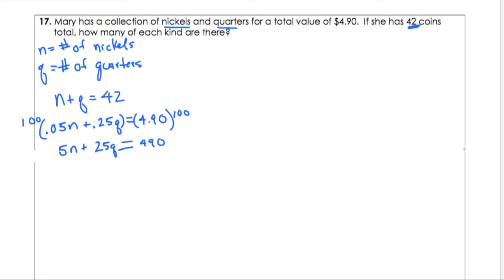So I'm going to again solve this similarly to our last example. I'm going to take this equation, multiply by negative 5 to give us negative 5n minus 5q is equal to negative 210. Now I'm set up to do elimination. I can eliminate my n's here. When I add my quarters, I get 20 quarters equals 280. Go ahead and divide both sides by 20. And we get that q is equal to 14. So we have 14 quarters.